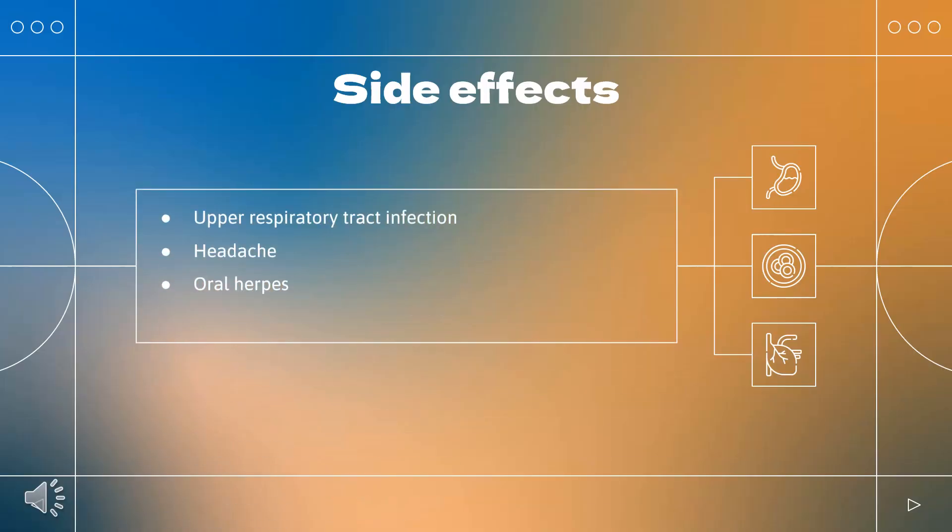Adverse effects of ofatumumab (Kesimpta) by frequency: Very common (greater than 10% frequency): upper respiratory tract infection, injection-related reactions (systemic), injection site reactions (local), urinary tract infections, and headache. Common (1–10% frequency): back pain, decreased blood immunoglobulin M, and oral herpes.